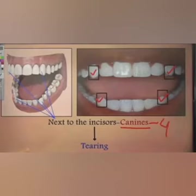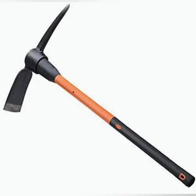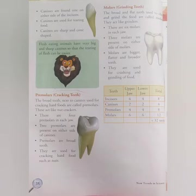The next kind of teeth are known as canines, also called tearing teeth. For eating sticky foods, we use pointed teeth just next to the incisors to tear the food — these are known as canines. There are two canines in the upper jaw and two in the lower jaw, totaling four. These canines are sharp like pickaxes. Flesh-eating animals have very big and sharp canines so that tearing of flesh is easier.